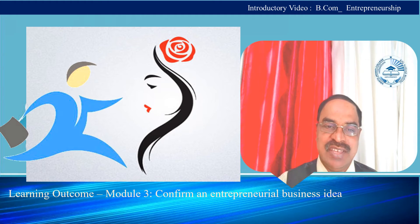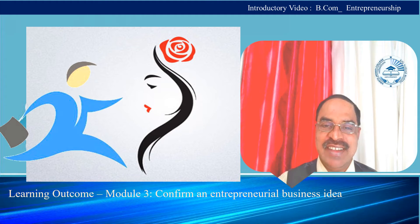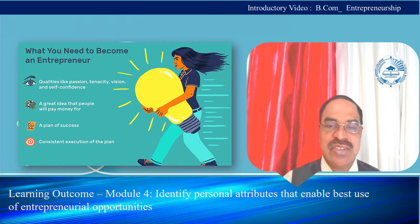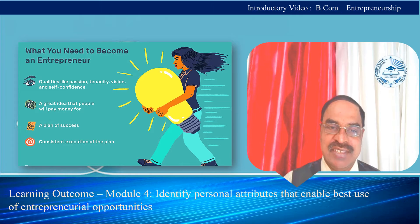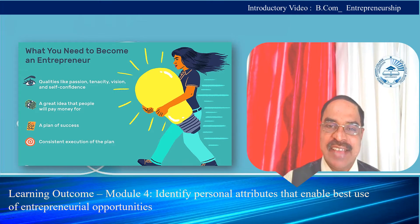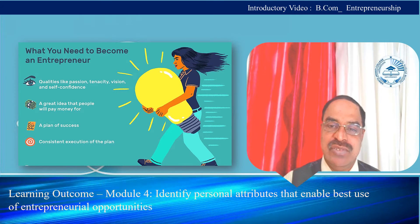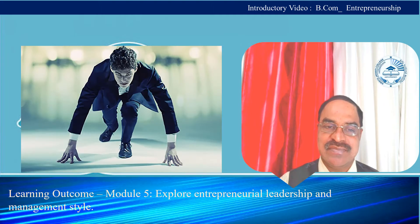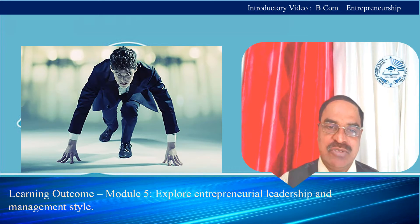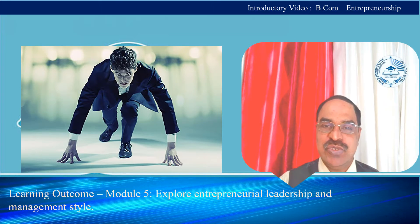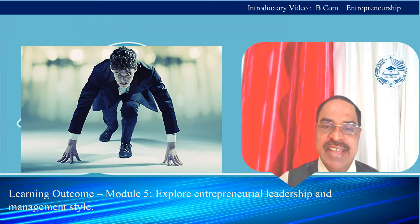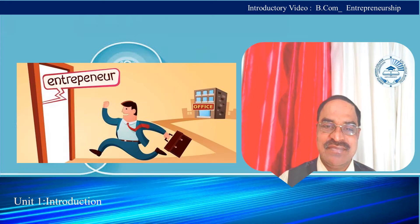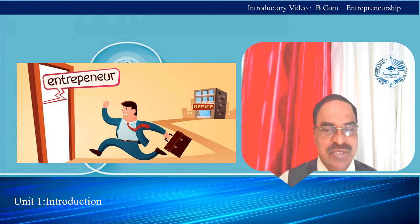The third learning outcome is to confirm an entrepreneurial business idea. The fourth learning outcome is to identify personal attributes that enable best use of entrepreneurial opportunities. The last learning outcome is to explore entrepreneurial leadership and management style. There are five units in this course.